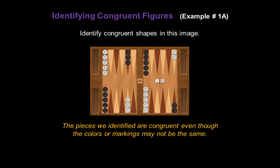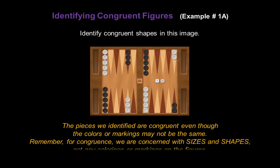Now the pieces we just identified are congruent even though the colors or markings may not be the same. But remember, for congruence we're concerned with size and shape, not any colorings or markings on the figures.